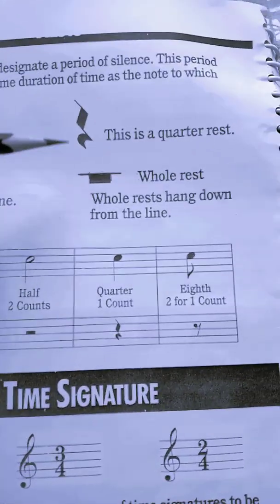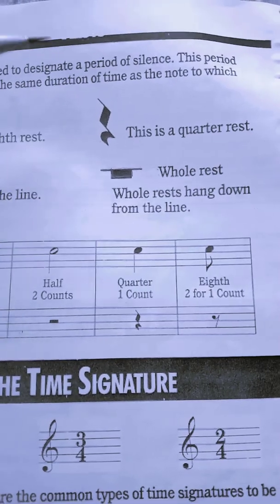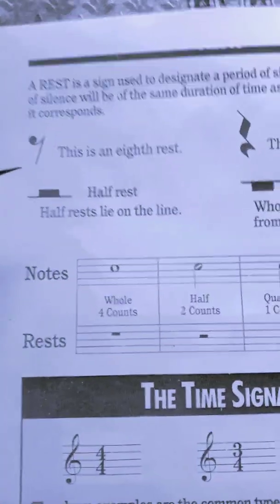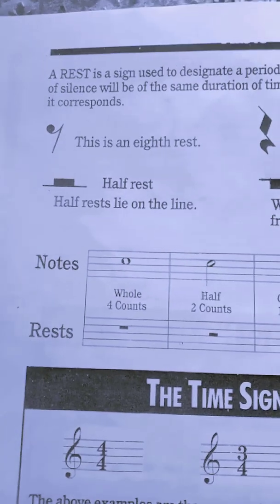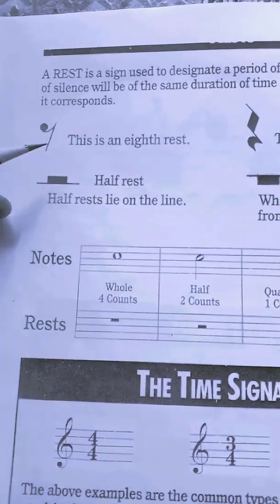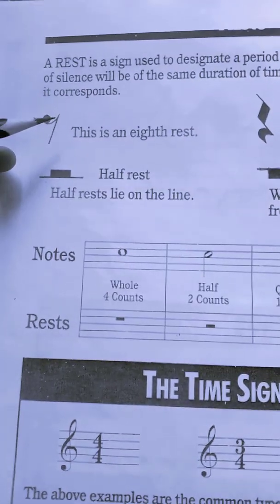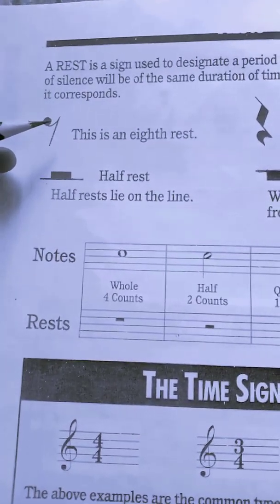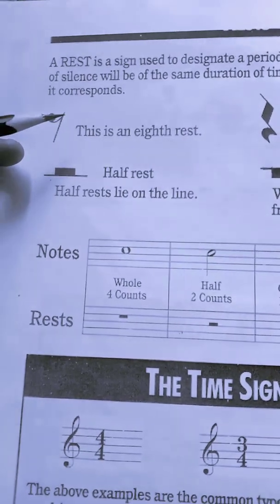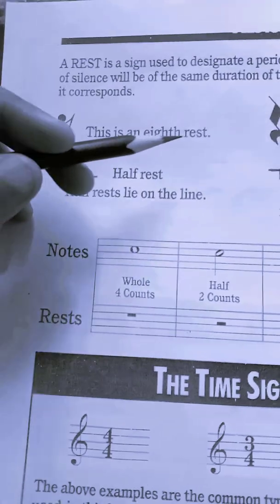The next rest we are going to learn is a quarter note rest. This is what a quarter note rest looks like — it looks like a curly bracket. And the last rest we are going to learn today is an eighth rest. It's a diagonal line with an inverted comma attached to the top of the slanting line.